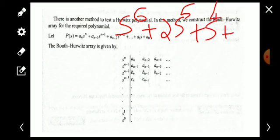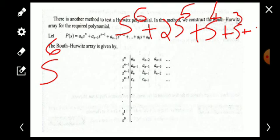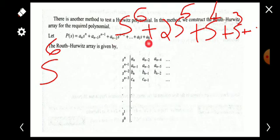In the first row (s^n), we write alternate coefficients: first a_n, then a_(n-2), then a_(n-4), a_(n-6), and so on. Then for the second row, we write s^(n-1) and again write alternate coefficients starting from a_(n-1), then a_(n-3), a_(n-5), and so on.